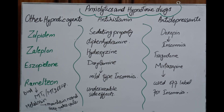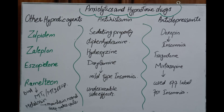Ramelteon may also increase prolactin levels. Antihistamines such as diphenhydramine, hydroxyzine, and doxylamine have sedating properties and can be used for sleep. Antidepressants including doxepin, trazodone, and mirtazapine are used for anxiety disorders and off-label for insomnia, due in part to their antihistamine properties.